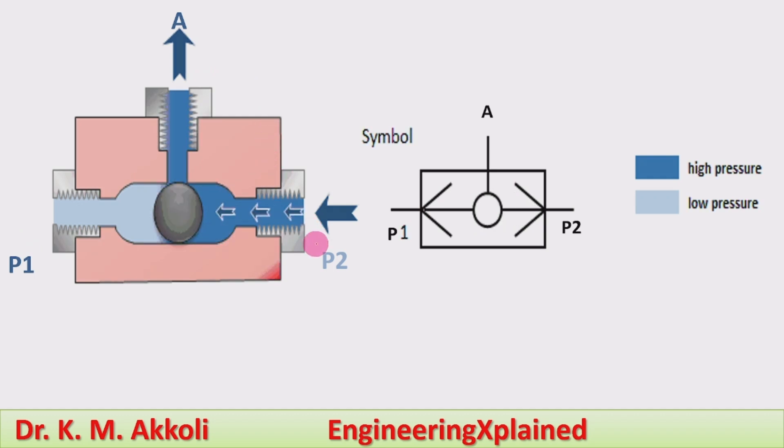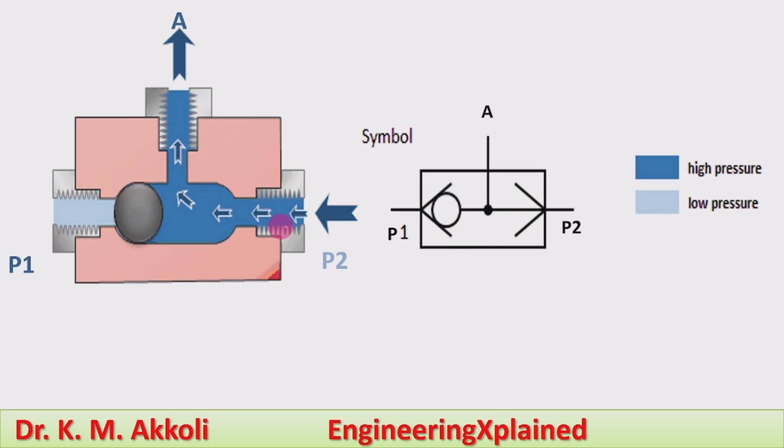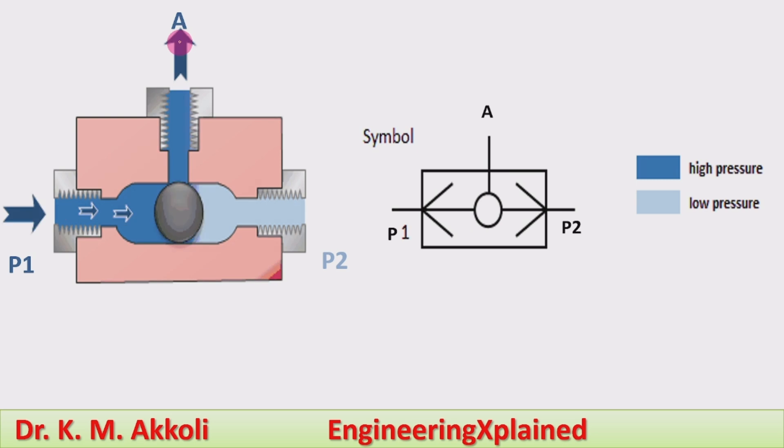If the pressure from the P2 source increases, the shuttle moves towards the left, and P2 connects to the actuator.